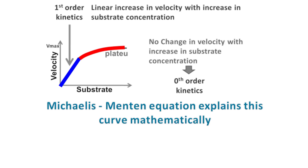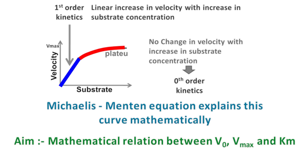The Michaelis-Menten equation explains this graph mathematically. The aim of this equation is to establish a mathematical relation between V0, Vmax, and Km, such that both first-order and zero-order kinetics can be explained.